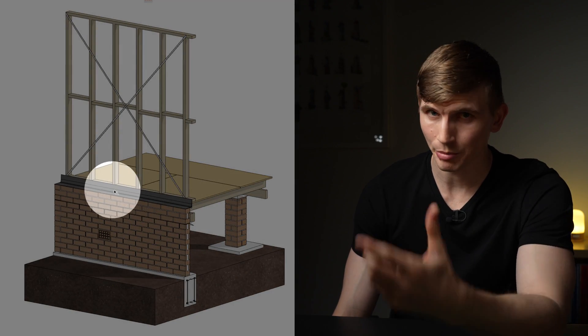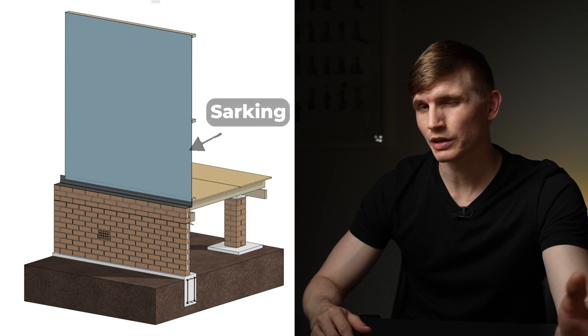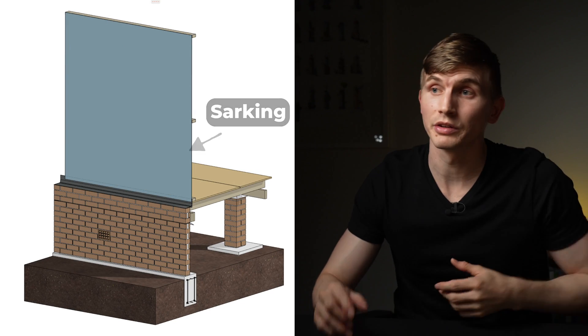Next up the DPC, the damp proof course, is attached to the bottom plate. Before additional brick courses, the flashing is installed over the DPC. The DPC helps divert any water that's been absorbed through the brickwork and has run down the cavity.